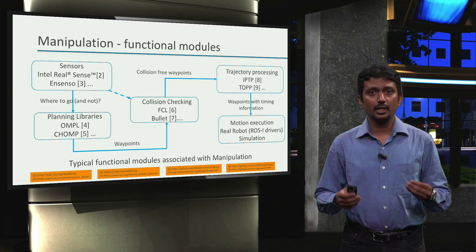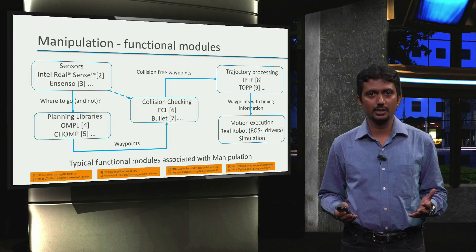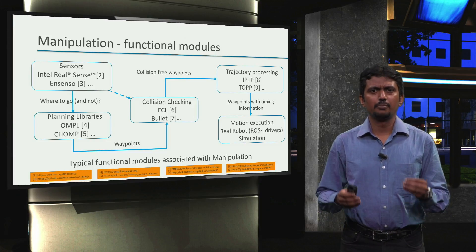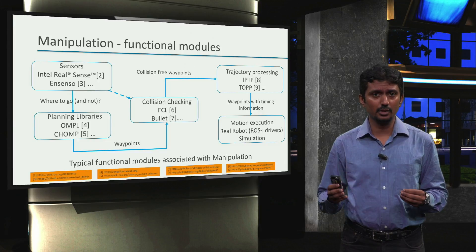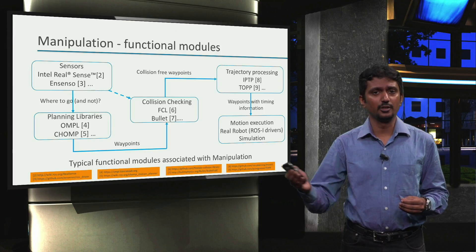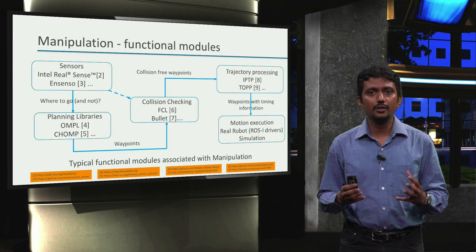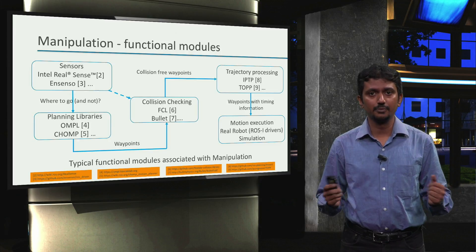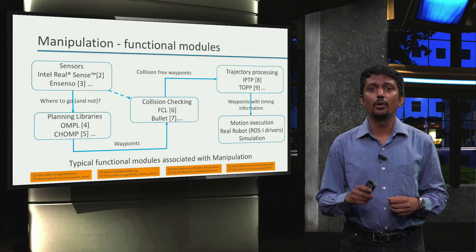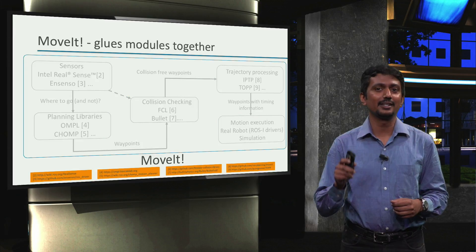Finally, we can execute the resulting trajectories on a simulated robot or on the real robot using the various robot drivers that are developed and supported by the ROS Industrial Consortium and others. That's plenty of software options — and I have only listed two examples here per module. But if you look on the ROS wiki, you will be spoiled for choices. Such a luxury comes at the cost of understanding how to interface each of these modules to work together to achieve manipulation, and that can be a tedious task. It would be nice if some software package would do this for us — and that's exactly what MoveIt does.